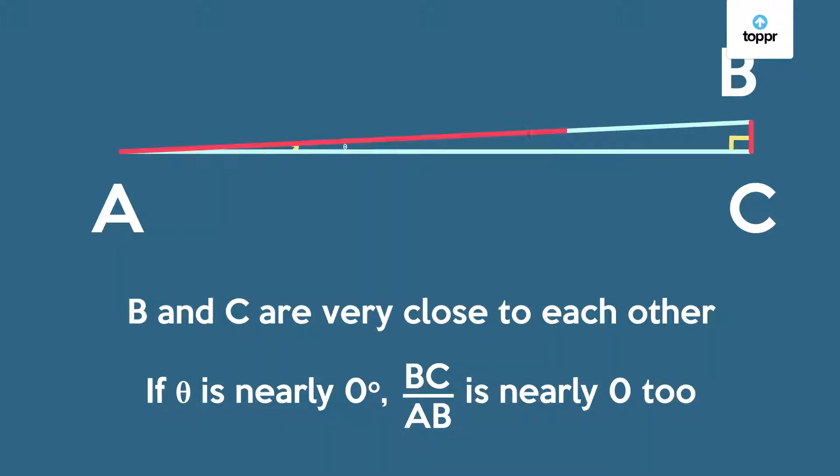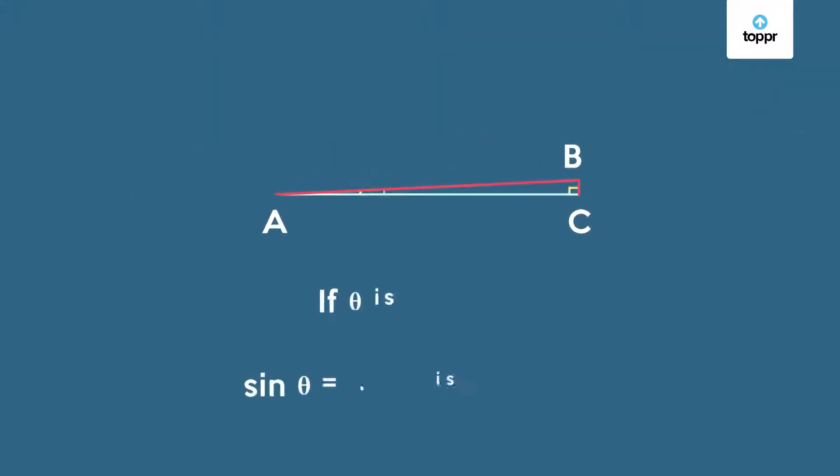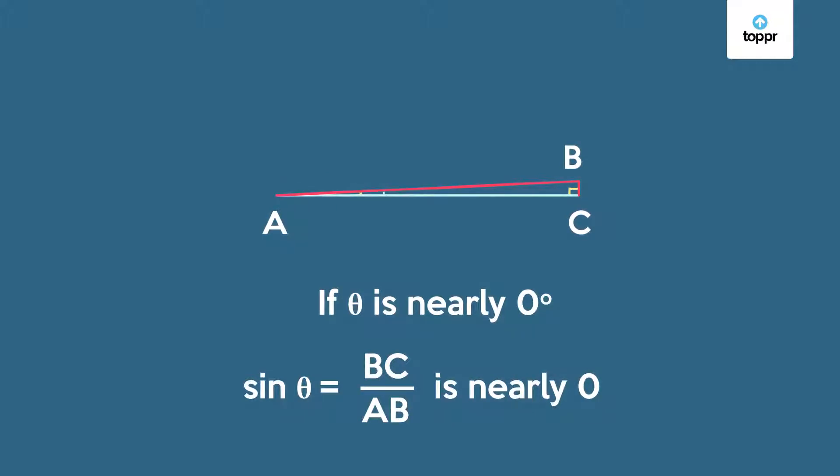So the sine of theta which is equal to BC upon AB is also nearly 0.